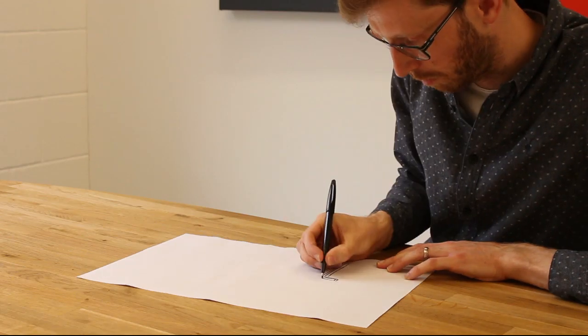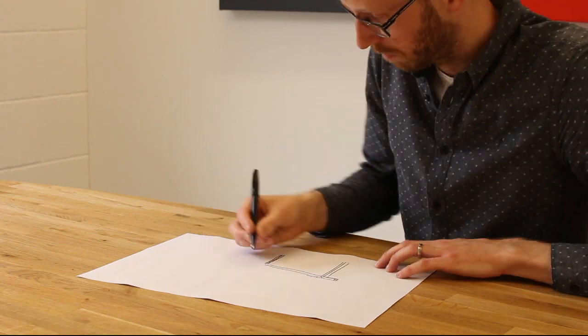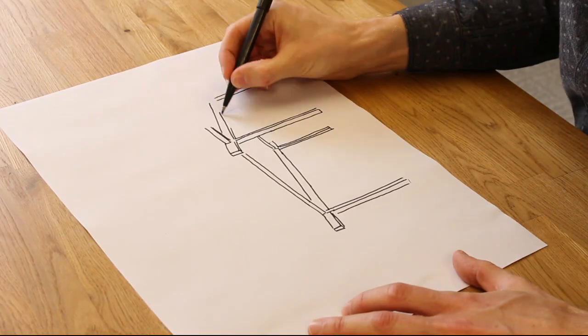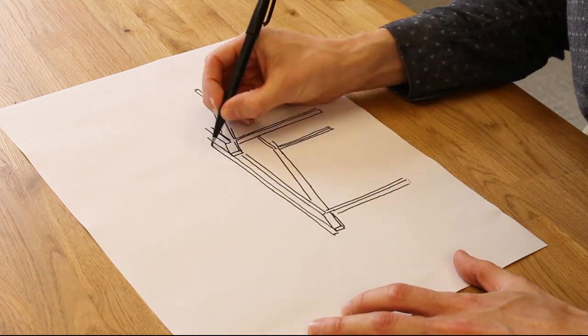This is generally where the CLT is used for a floor plate spanning between a frame structure. The frame could be made from either glulam or steel beams and columns.